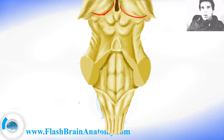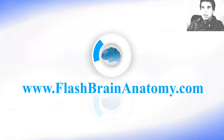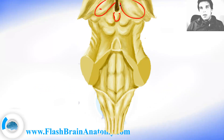This is the medial geniculate body, and this is the lateral geniculate body. The superior colliculi connect to the lateral geniculate body via fibers from here. The inferior colliculi are connected with the medial geniculate body. This part here is the pineal gland — it also belongs to the diencephalon, and it actually belongs to the epithalamus. So we had the thalamus here as one part of the diencephalon, and the epithalamus is another part, with the pineal gland being part of it.